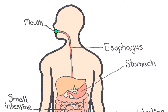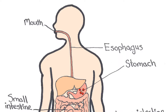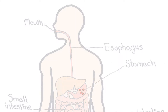Food is first taken into the digestive tract via the mouth. It then travels down the esophagus, which is a tube that connects the mouth to the stomach. Once at the stomach, the food is mixed with stomach acid and enzymes, which break it down into small pieces called chyme.